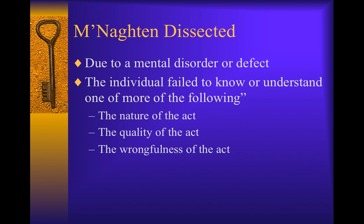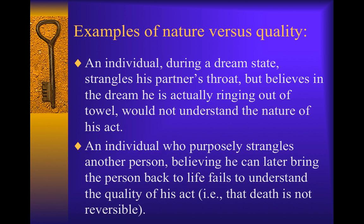Are they capable of engaging in those thoughts? Let's look at some examples. The first is an example of nature: an individual during a dream state strangles his partner's throat, but believes in the dream he is actually wringing out a towel. This person would not understand the nature of their act. The second example is an individual who purposely strangles another person, believing he can later bring the person back to life. This person fails to understand the quality of their act — in other words, that death is not reversible.